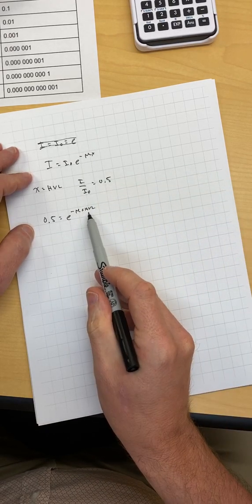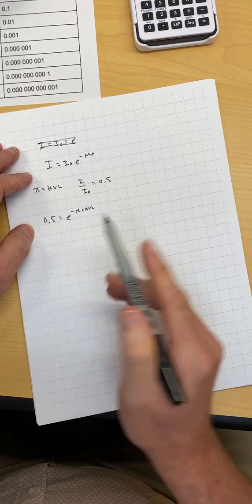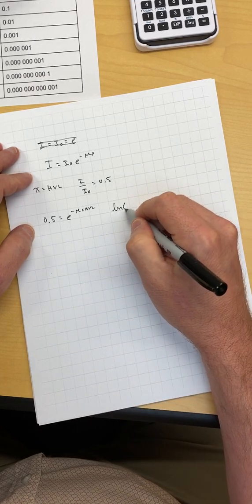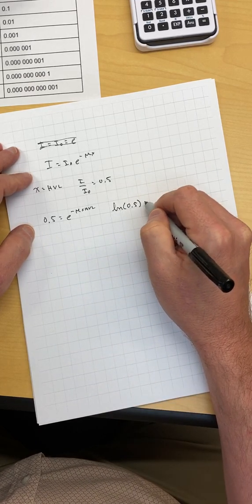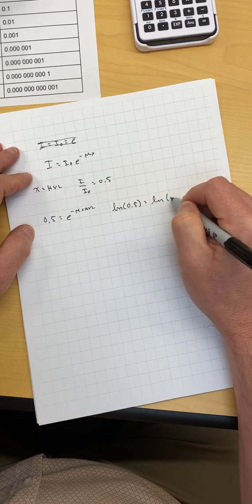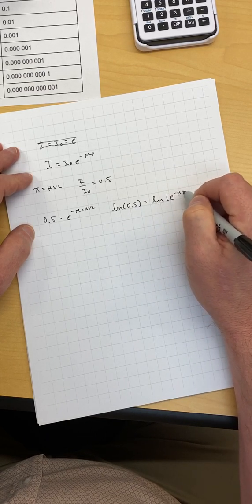If I want to pull this down, and that's a multiply signal right there. If I want to pull these both down, do natural log on both sides. Natural log of 0.5 equals natural log e to the minus mu HVL.